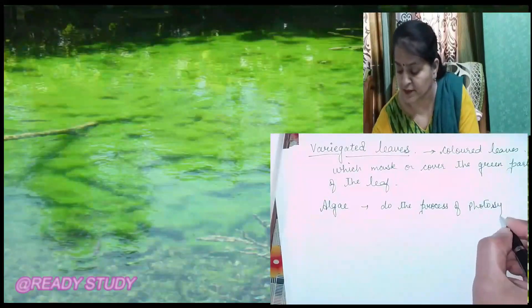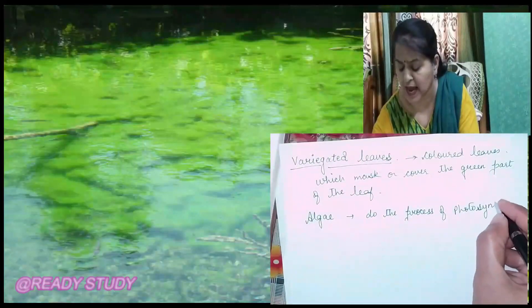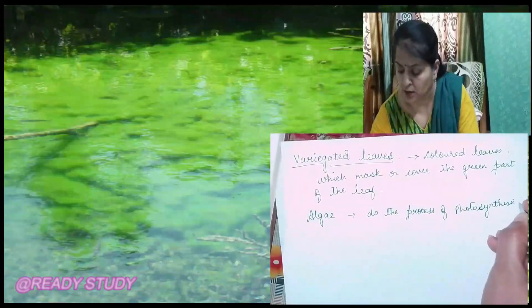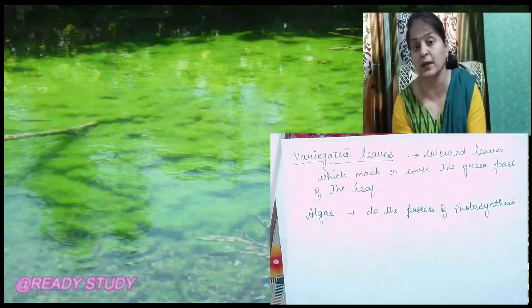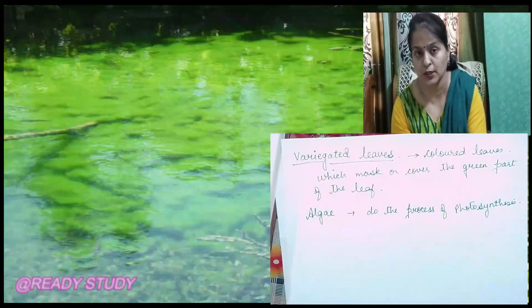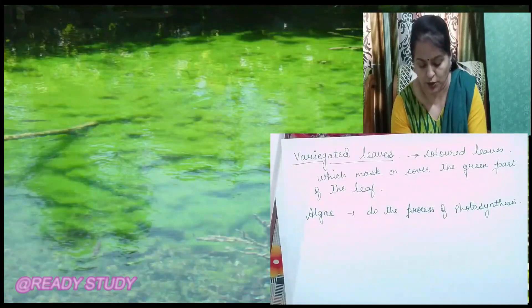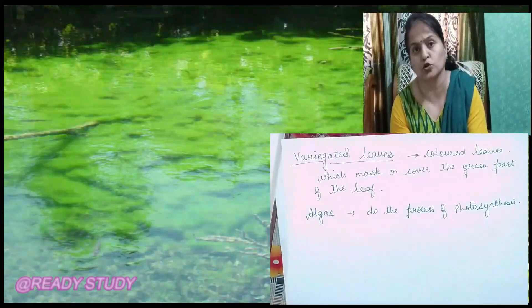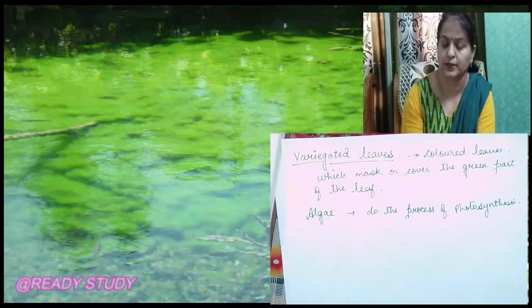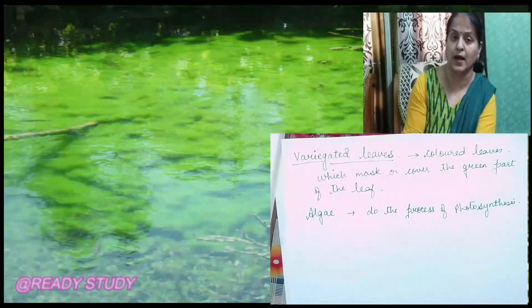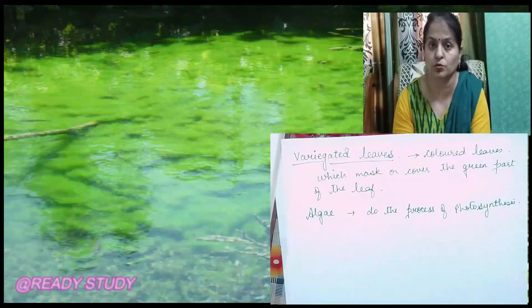You must have seen algae in ponds or some stagnant water bodies. They are green in color and slimy and sticky to touch. You can see the growth of algae in your nearby ponds or in stagnant water bodies — they grow there and can also do the process of photosynthesis.